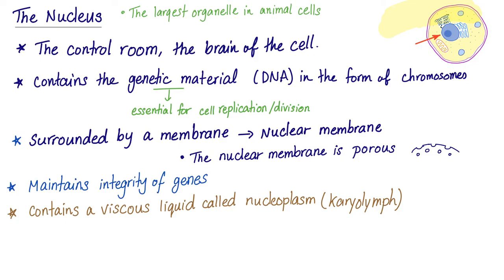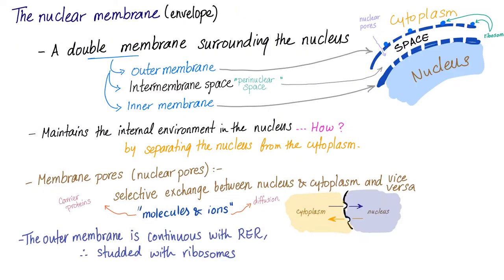Let's review what we discussed in the previous video. The nucleus is the control center, contains DNA inside the chromosomes, and is surrounded by a membrane called the nuclear membrane that has pores. The nuclear membrane, like any membrane in your body, is a double membrane with an intermembrane space in between, and it has pores to allow selective exchange for molecules and ions. The outer membrane of the nuclear membrane is continuous with the rough endoplasmic reticulum.